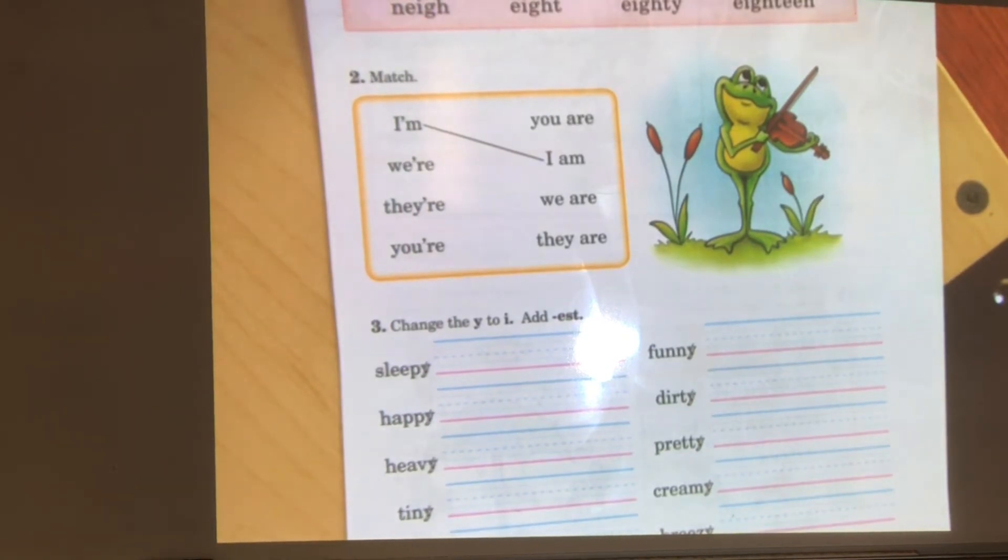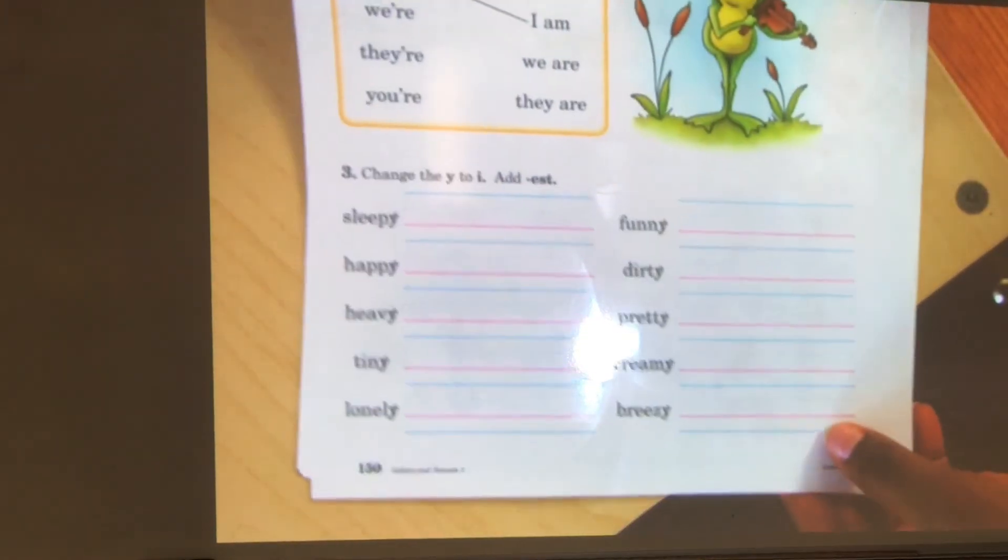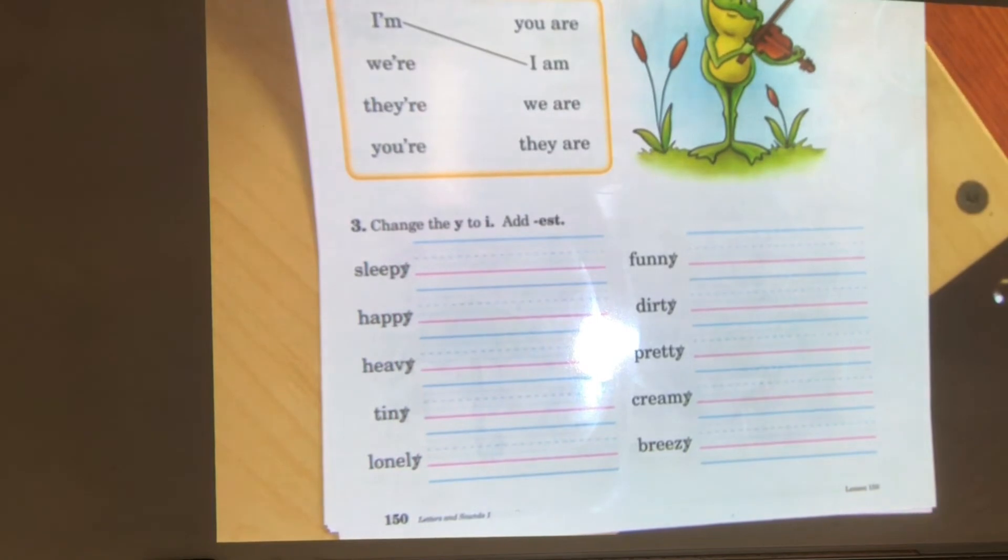Let's take a look at section three. Change the Y to an I and add E-S-T. The first word is sleepy. That root word ends with a Y. Before adding a suffix beginning with E, drop the Y, replace it with an I, and then add your suffix E-S-T. The new word will be sleepiest.